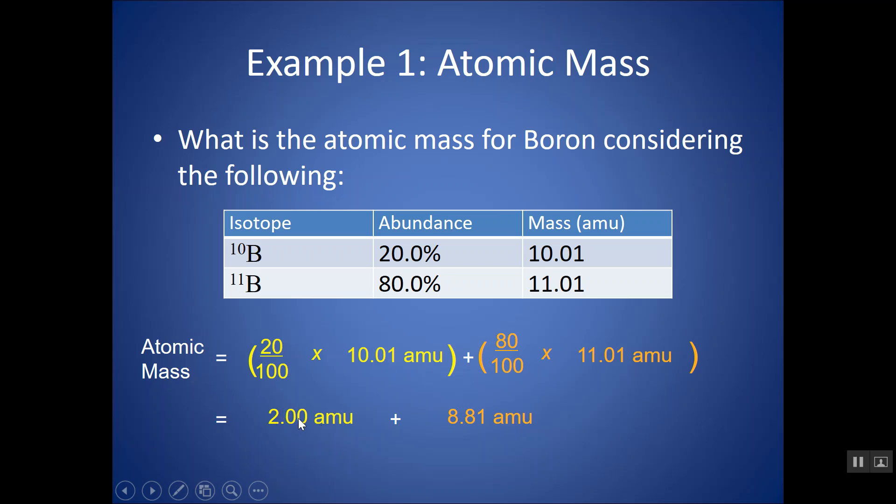Just don't forget the parentheses. Or you can do it yourself in steps. So if I do 20 over 100 times 10.01, I get 2 AMUs would be the unit carried down, atomic mass units. And 80 over 100 times 11.01, I get 8.81. And then I just add these two numbers together, and I get 10.81.